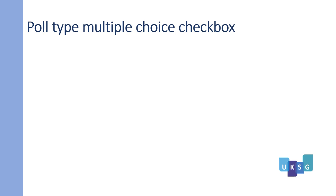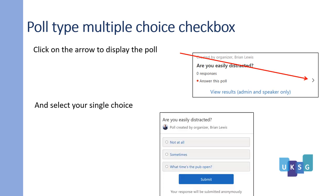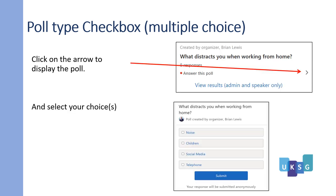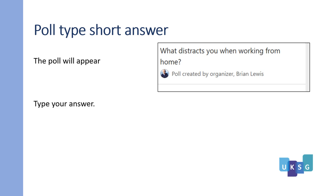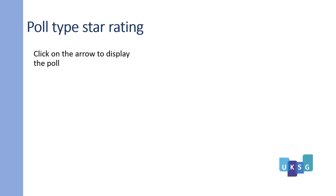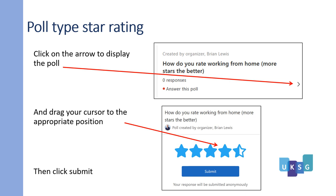Poll type: multiple choice (single answer) — click on the arrow to display the poll, select your single choice, and then click submit. Poll type: checkbox (multiple choice) — click on the arrow to display the poll, select your choice or choices, and then click submit. Poll type: short answer — the poll will appear, you can type your answer, and then click submit. Poll type: star rating — click on the arrow to display the poll, drag your cursor to the appropriate position, then click submit.